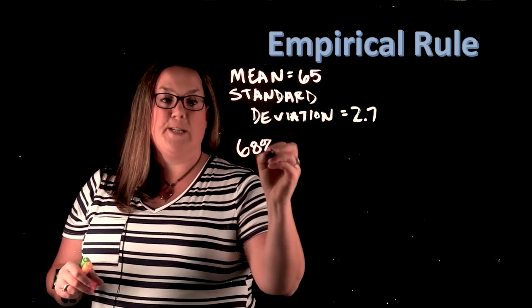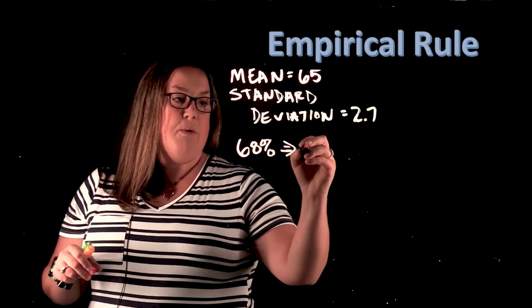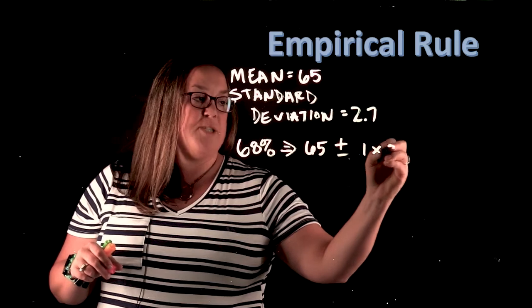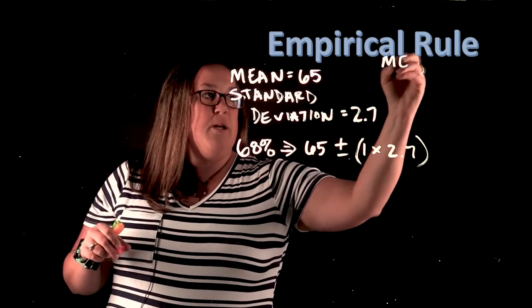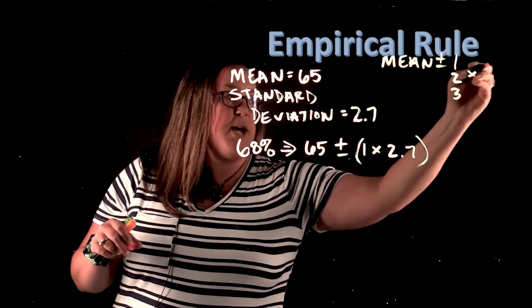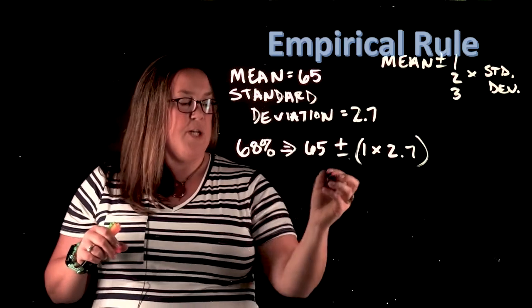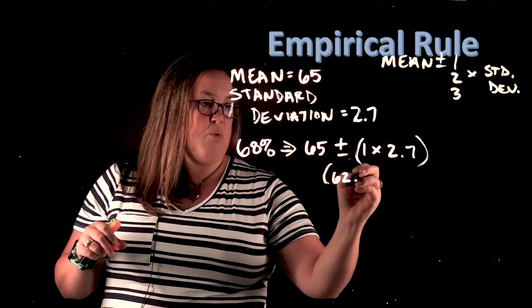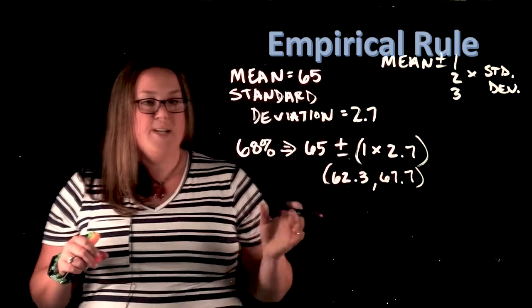The first one is the 68% interval, and that's taking the mean—remember, our mean is 65—and we add and subtract one times the standard deviation. Just in case you need to be reminded, this is the formula: mean plus or minus one, two, or three times the standard deviation, and that was for all three of the intervals. So this would come out to be 62.3 up to 67.7.